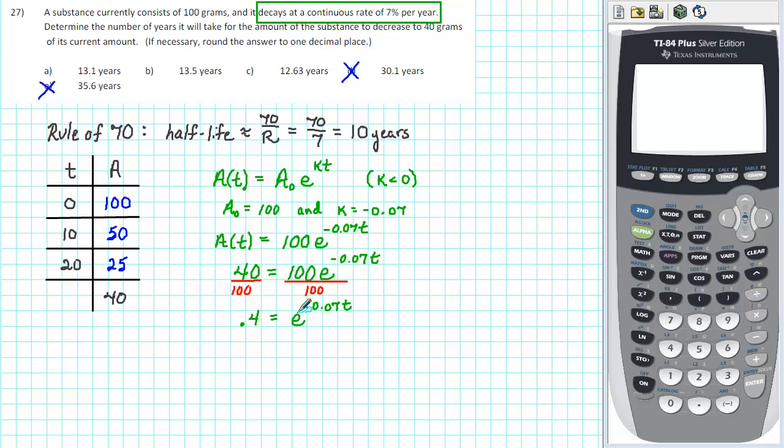T is in the exponent of e so we want to take the natural logarithm of both sides to undo the exponentiation. The result is the natural logarithm of 0.4 is equal to negative 0.07t. The final step is to divide both sides by negative 0.07. We find that t is equal to the natural logarithm of 0.4 divided by negative 0.07. We can use our calculator to approximate this expression.